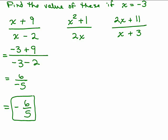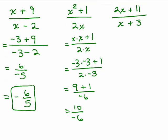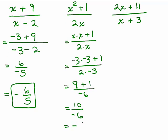All right, next one: x squared plus 1 over 2x. X squared means x times x, and 2x means 2 times x. Since x is negative 3, I have negative 3 times negative 3 plus 1 over 2 times negative 3, which is 9 plus 1 over negative 6, which is 10 over negative 6, which is negative 5 thirds. You can leave your answer as negative 5 thirds as long as it's reduced, or you could put negative 1 and 2 thirds.